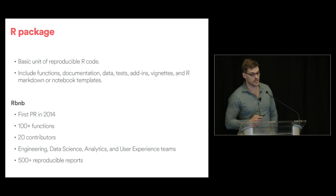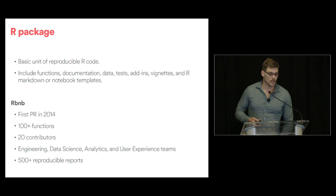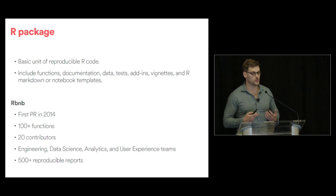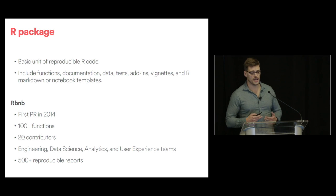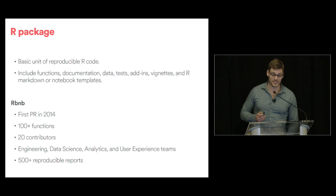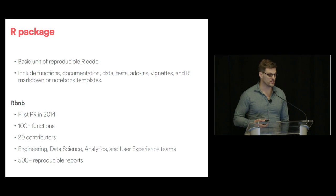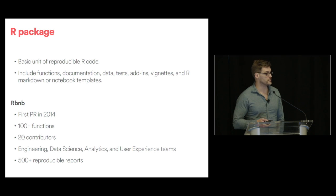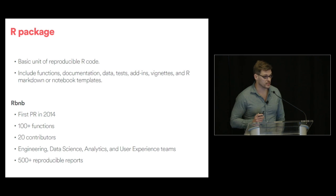The solution was in 2014, when we introduced our first R package. As you probably know, an R package is the basic unit of reproducible R code and can include functions, documentation, data, tests, add-ins, vignettes, etc. The package was cleverly named RBMB. It has over 100 functions, more than 20 contributors, and is used not only by the data science team but also by engineering, analytics, and user experience. Today we have more than 500 reproducible reports done using R in our knowledge repository.